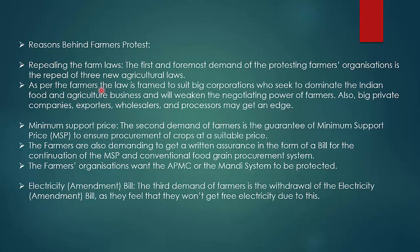When all states did not adopt the reforms — since agriculture is a state subject — the government ultimately passed laws directly through parliament. As per farmers, the law was framed to suit big corporations seeking to dominate Indian food and agriculture, weakening the negotiating power of farmers. Big private companies, exporters, wholesalers, and processors were feared to get an edge.